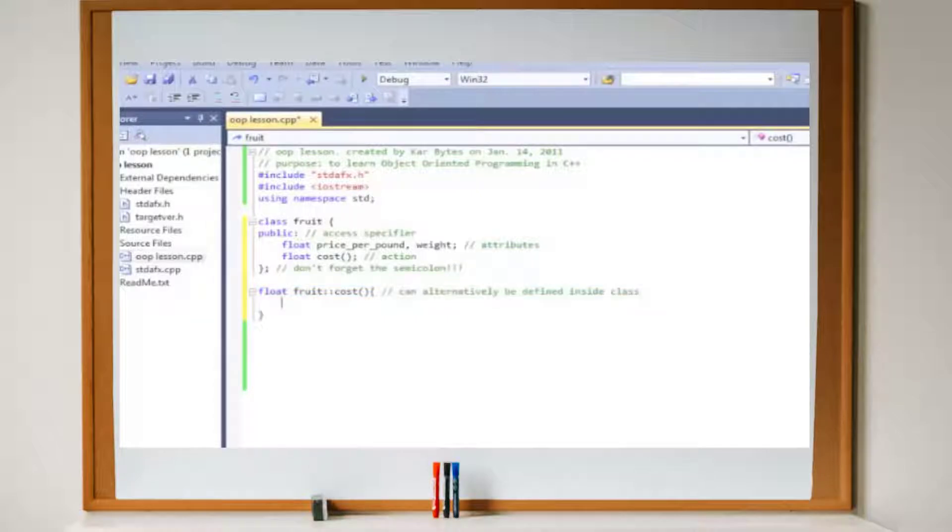Since we're declaring the function outside the class, we have to use the scope resolution operator, which is the double colons, to signify that it's a member of the fruit class. The function will return the cost of the fruit based on the weight and that price per pound.